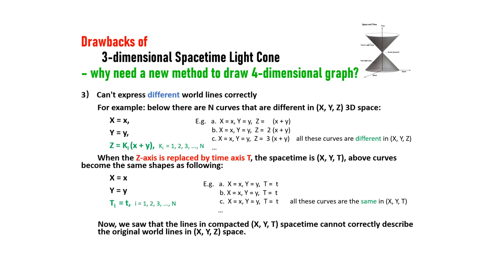Third, can't express different world lines correctly. For example, below there are N curves that are different in X, Y, Z 3D space. The curves are X equals X, Y equals Y, and Z equals K(i), X plus Y, K(i) equals 1, 2, 3...N. And the example is X equals X, Y equals Y, and Z equals X plus Y.